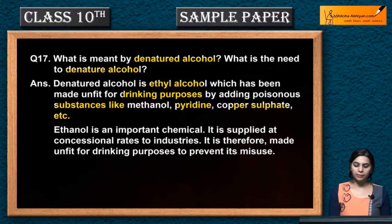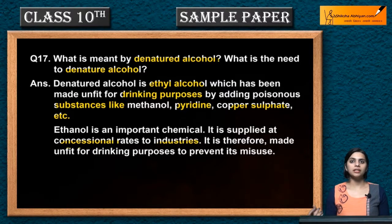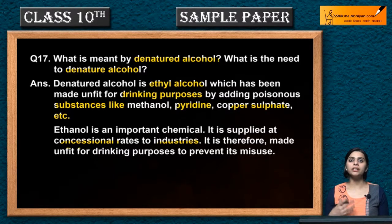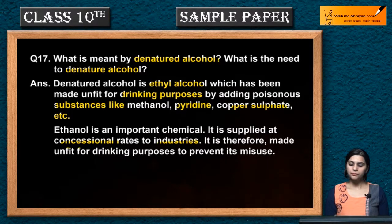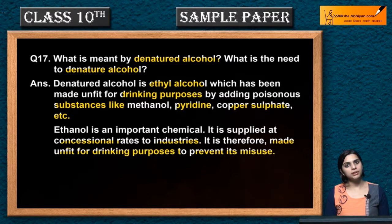Ethanol is an important chemical. It is supplied at concessional rates to industries because it is available at a very low price — since it is not fit for drinking purposes. It is therefore made unfit for drinking to prevent its misuse.